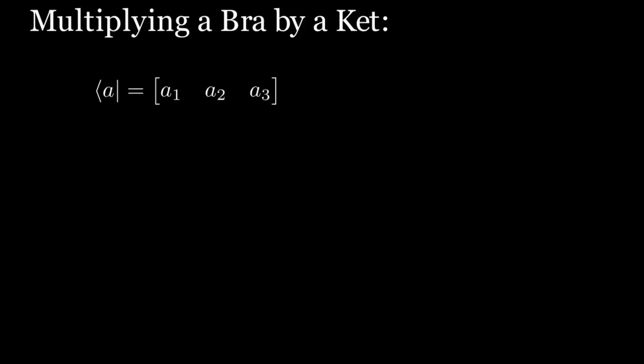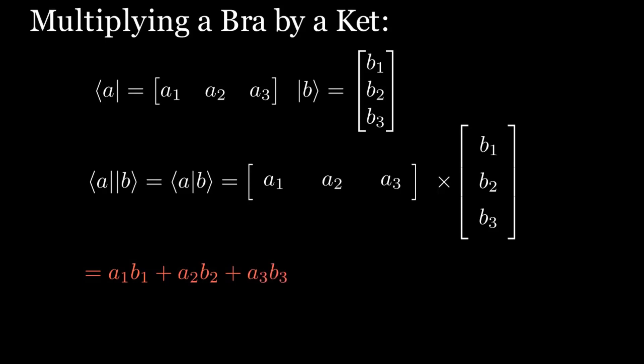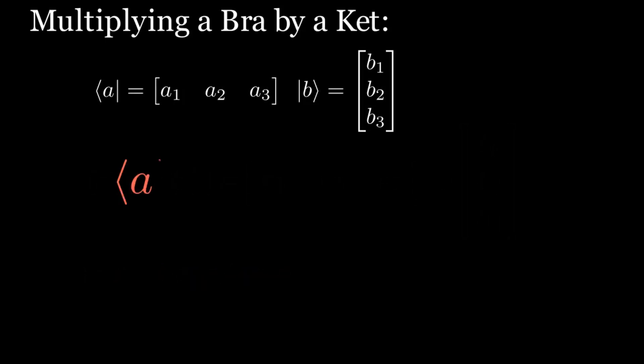Now let's look at how to multiply a bra by a ket. If we have a bra and a ket of the same dimension, we can multiply them — bra on the left, ket on the right — to obtain a number. We use concatenation to denote the product, writing bra a next to ket b. Squeezing the symbols together, the vertical lines coincide and we get the bracket notation ⟨a|b⟩. The definition of this bracket product follows.